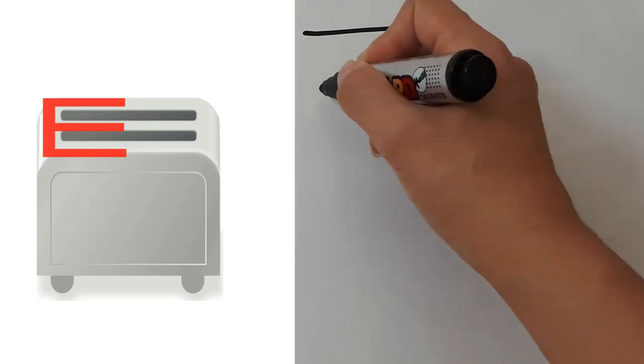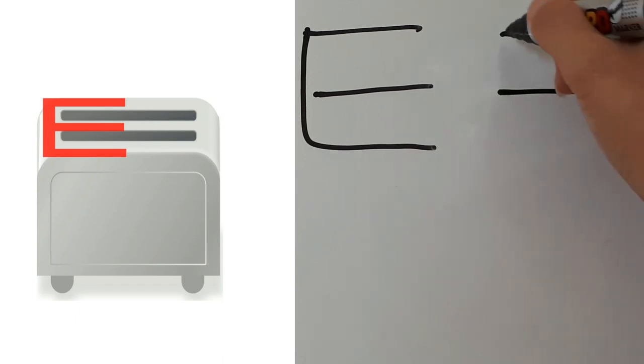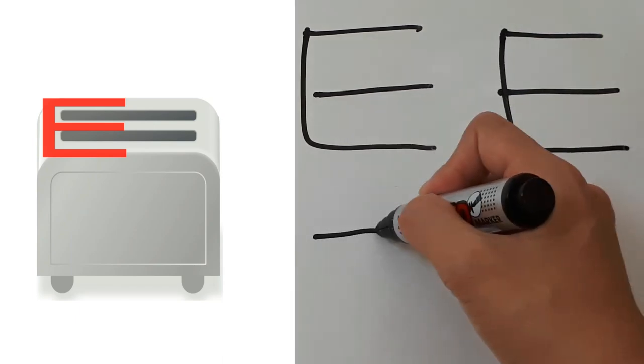ㅌ. Three strokes. One, two, three. One, two, three. Some people write it like this.